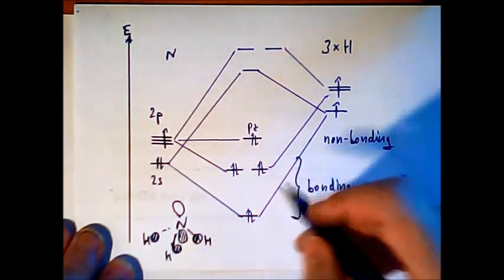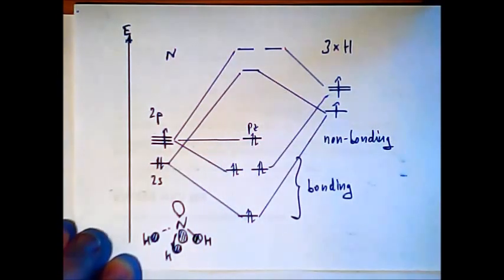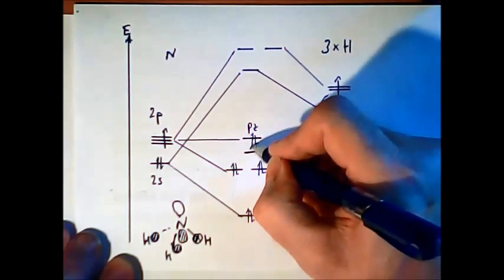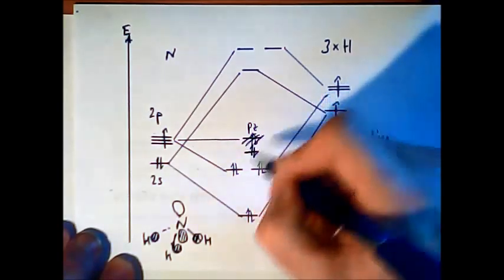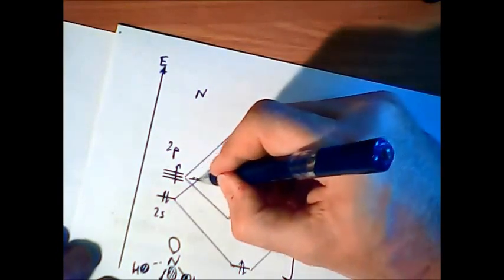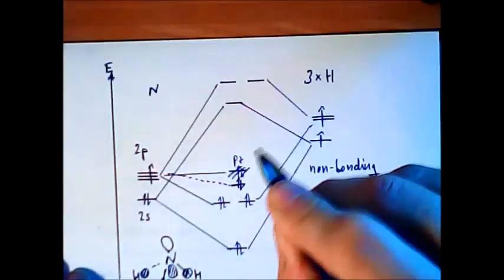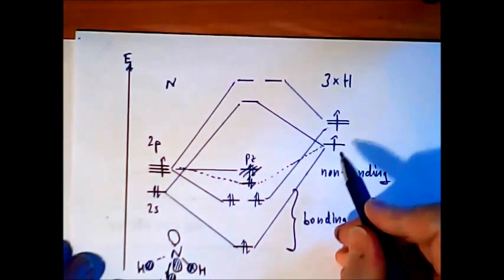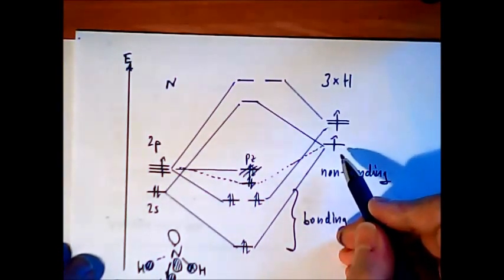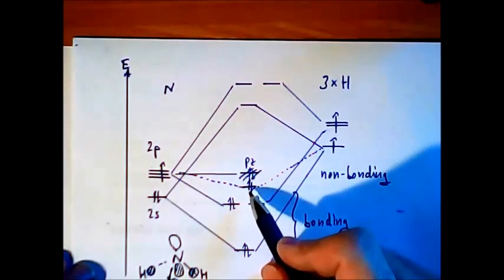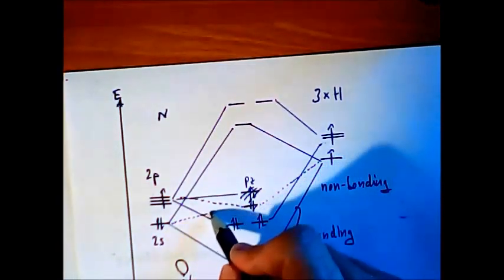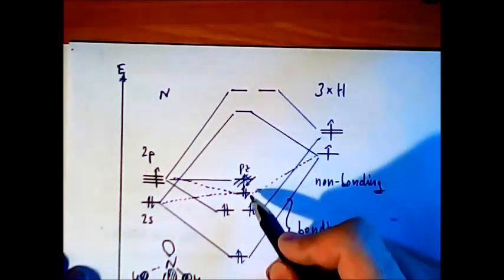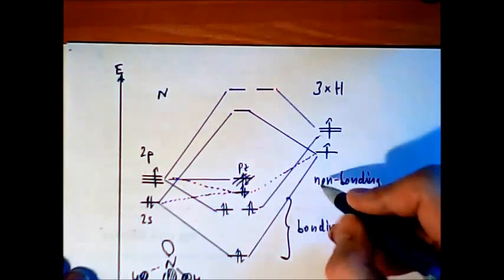And in the MO diagram we should indicate this by writing the pz lower in energy. So there is a small interaction with this combination of hydrogens. And in this orbital also we have some character of the s orbital.